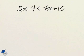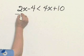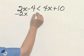Solve and graph. Let's get the letters together. Subtract 2x from both sides.